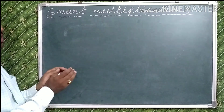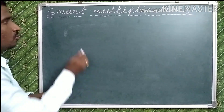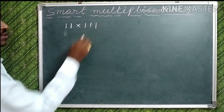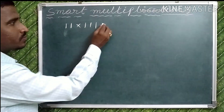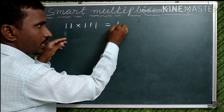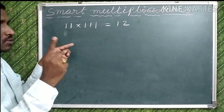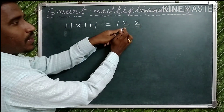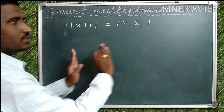Now let's discuss the second case, where the number of ones are not equal. For example: 11 into 111 — here 2 ones and 3 ones, so the ones are not equal. In this case, take the least number of ones, which is 2, and write 1, 2. The difference in ones is only 1, so repeat the highest digit (2) one more time. Then write the numbers before 2 in descending order: 2, 1. That is the answer.